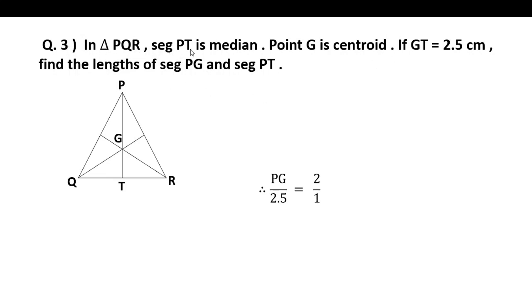Question 3: In triangle PQR, segment PT is a median. Point G is centroid. If GT is equal to 2.5 cm, find the length of segment PG and segment PT. The centroid divides each median in the ratio of 2 to 1. PG to GT is equal to 2 is to 1.